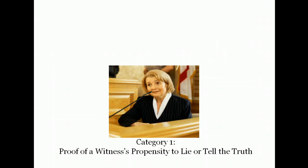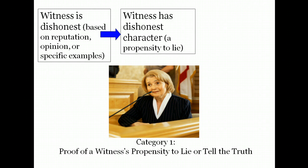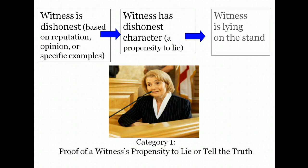Category one is for proof of a witness's propensity to lie or tell the truth. We've seen this already when we did the impeachment rules 608 and 609, but let's look at it again. We start with evidence that the witness is dishonest — this could be based on her reputation, on someone's opinion, or on specific examples. The impeaching lawyer uses that to suggest that the witness has a dishonest character or a propensity to lie, and therefore is more likely lying on the witness stand. This is governed by Rules 608 and 609.